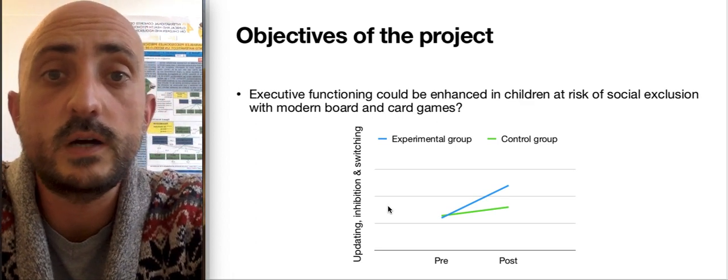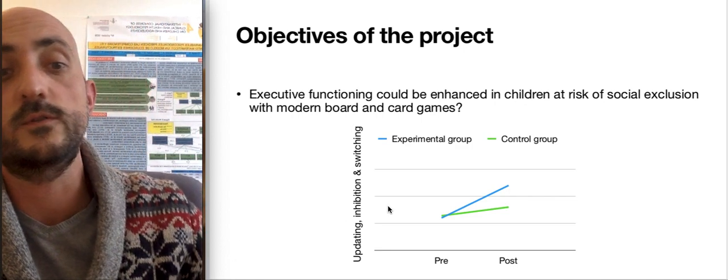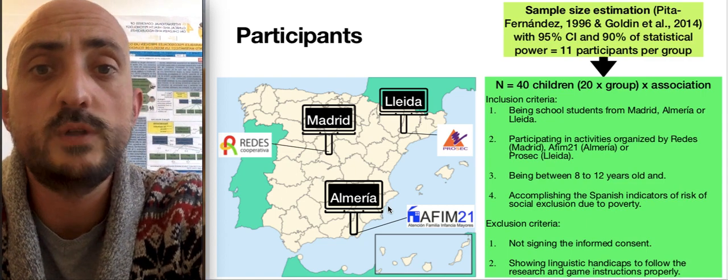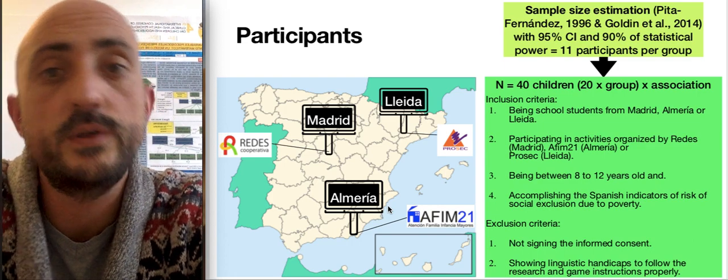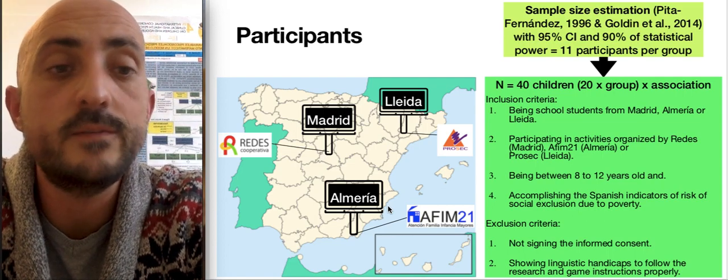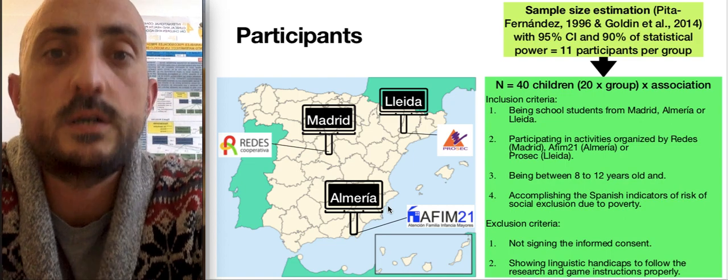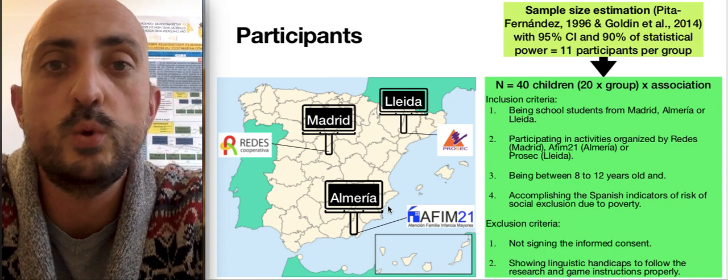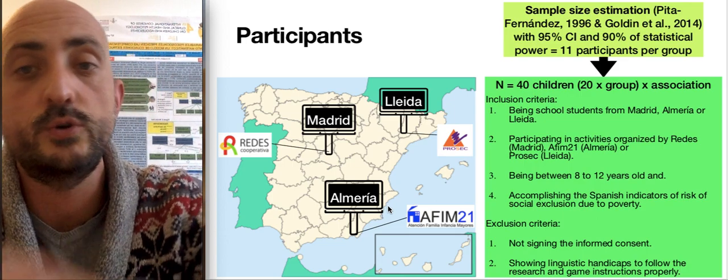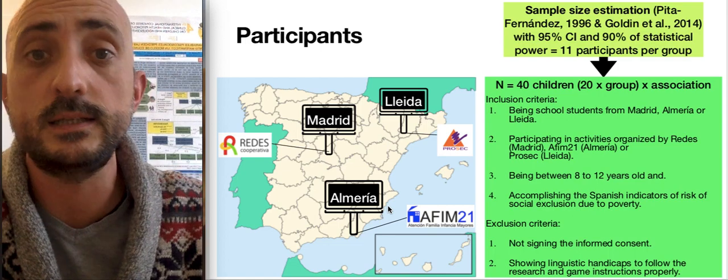That's why the main objective of our study is to test if executive functions could be enhanced in children at risk of social exclusion using modern board and card games. We are going to develop a multi-center study in Lleida, Madrid and Almería with our partners that I have presented before. Our calculations estimated that only 11 participants per group should be enough, but we want to perform the best research that we could and we want to assess 40 children, 20 per group, with different inclusion and exclusion criteria that you can see in the slide briefly. They are the common criteria in this kind of research.